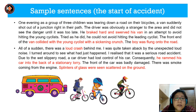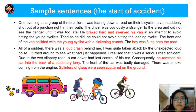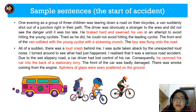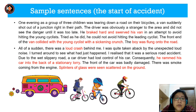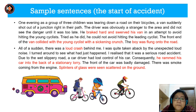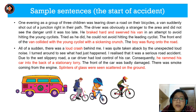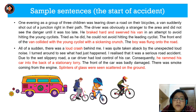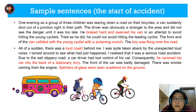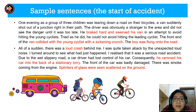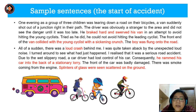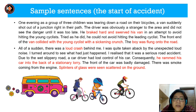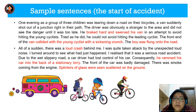There are more sample sentences here. One evening, as a group of three children were tearing down a road on their bicycles, a van suddenly shot out of a junction right in their path. The driver was obviously a stranger to the area and did not see the danger until it was too late. He braked hard and swerved his van in an attempt to avoid hitting the young cyclists. Try as he did, he could not avoid hitting the leading cyclist. The front end of the van collided with the young cyclist with a sickening crunch. The boy was flung onto the road.